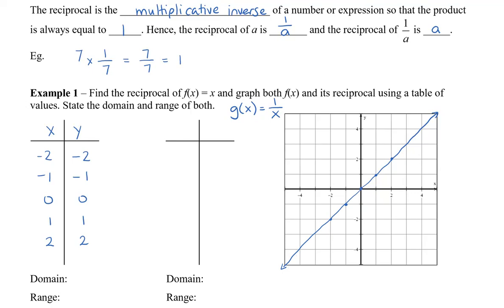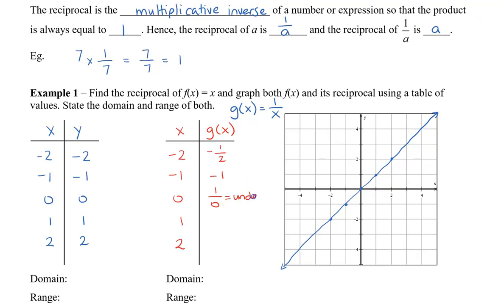Now let's graph the reciprocal. We'll call this x, and g of x for y, so that we know it's the reciprocal. We're going to use the same x values, and because g of x equals 1 over x, we can take the reciprocal of all of our x values. Now 1 over 0 is undefined, because we can't divide by 0. Then we have 1, and then we have a half. Graphing the reciprocal, we get something that looks like this.